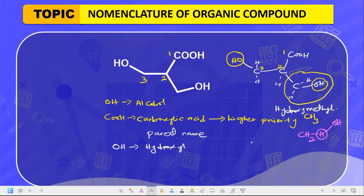The hydroxymethyl group is at position number two, and the other hydroxy substituent is at position number three. The longest continuous chain is one-two-three, which gives us 'propanoic acid' as the base name. When you have a choice between two substituents, you name the one that is less bulky first. The simple hydroxy group is less bulky than the hydroxymethyl group, so hydroxy comes first.